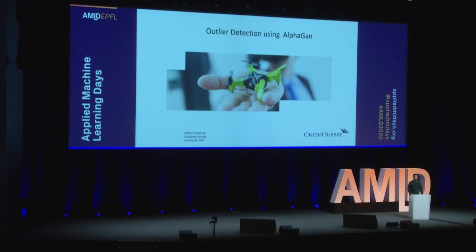I'm Konstantin Nicolai and I work as a data scientist for Credit Suisse. I'm here today to talk to you about outlier adaptation using a novel technique that was initially proposed for image matting.